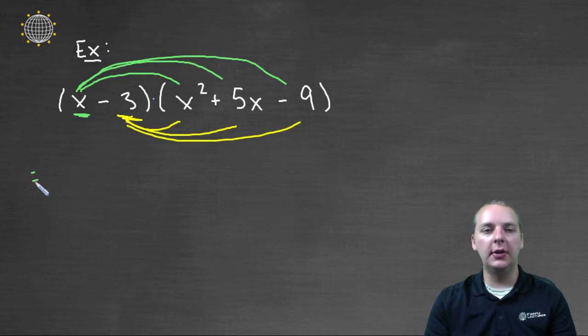Now I'll try to color code these as we go. X times x squared would give us x cubed. X times five x would give us plus five x squared. And x times negative nine would make minus nine x.